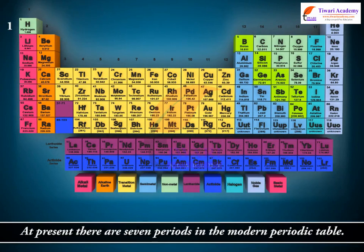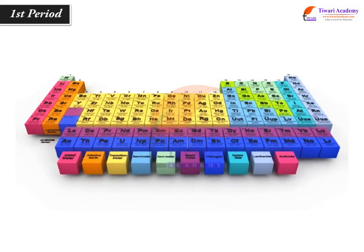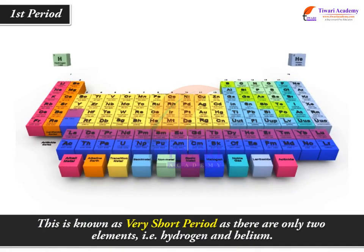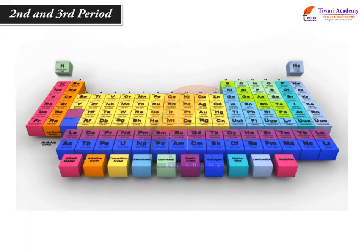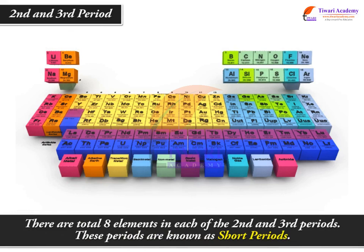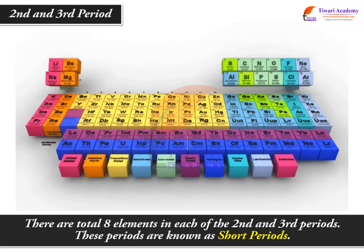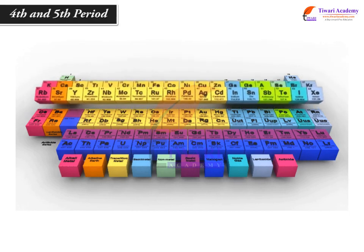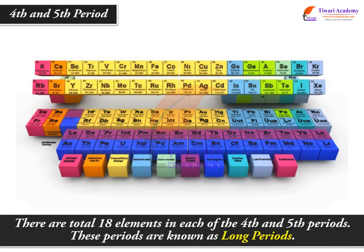At present, there are 7 periods in the modern periodic table. There are 18 elements in each of the 4th and 5th periods. These periods are known as Long periods.